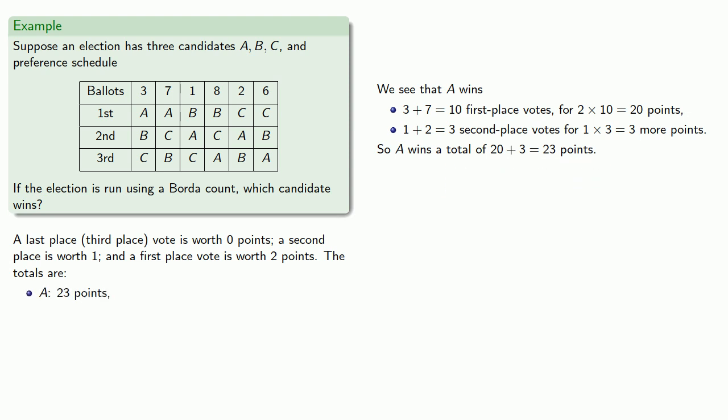Let's take a look at B. B wins these first place votes, and that's one plus eight, nine first place votes, and that gets B eighteen points. And then, these voters and these voters gave B a second place vote, so that gets B an additional nine second place votes for an additional nine points, and altogether B wins twenty-seven points.